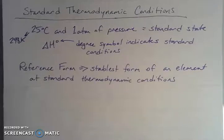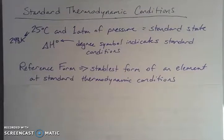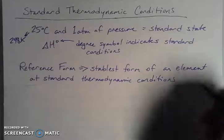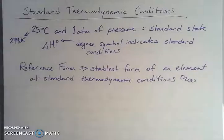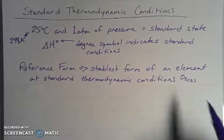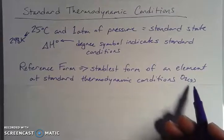Another important term we're going to run into when talking about how we calculate enthalpy is the reference form. The reference form is the most stable form of an element at 25 degrees Celsius and one atmosphere of pressure. For example, the most stable form of oxygen under those conditions is O2 gas — it exists as a diatomic molecule in the gas phase.